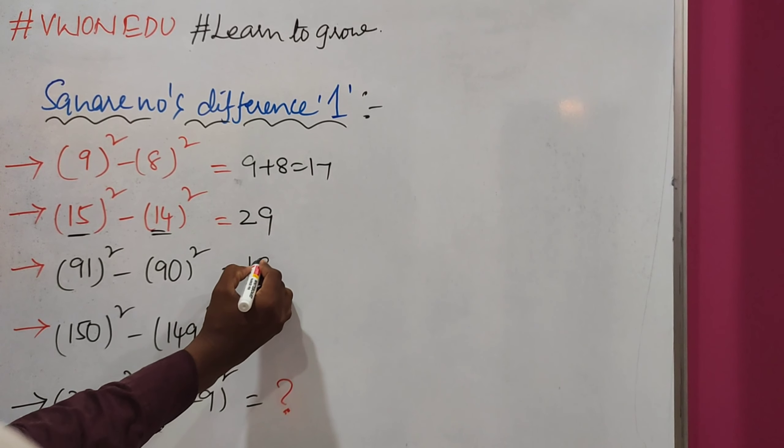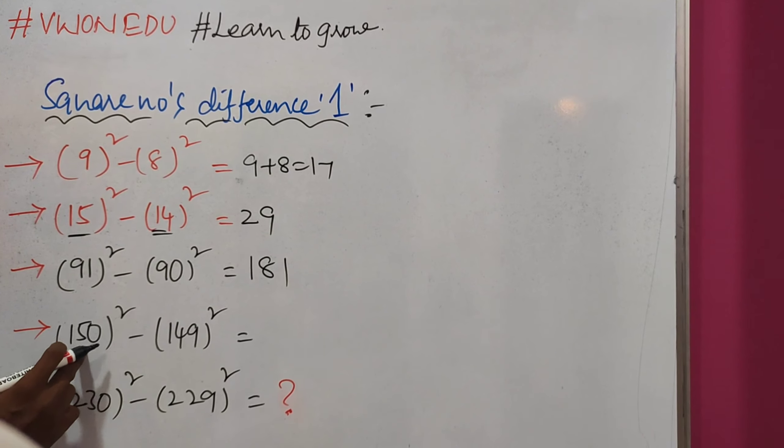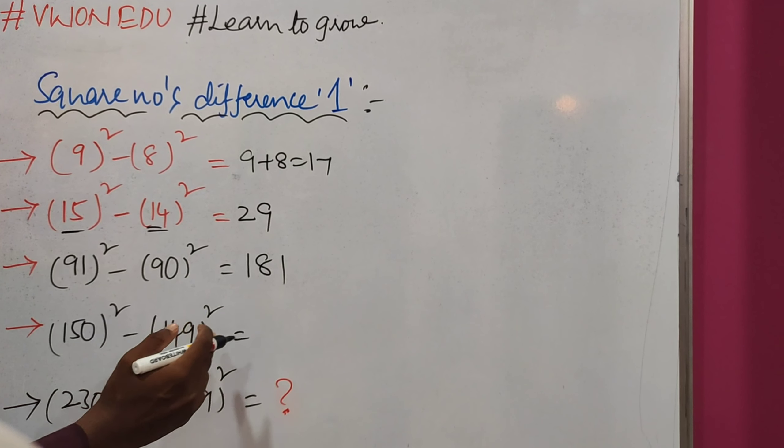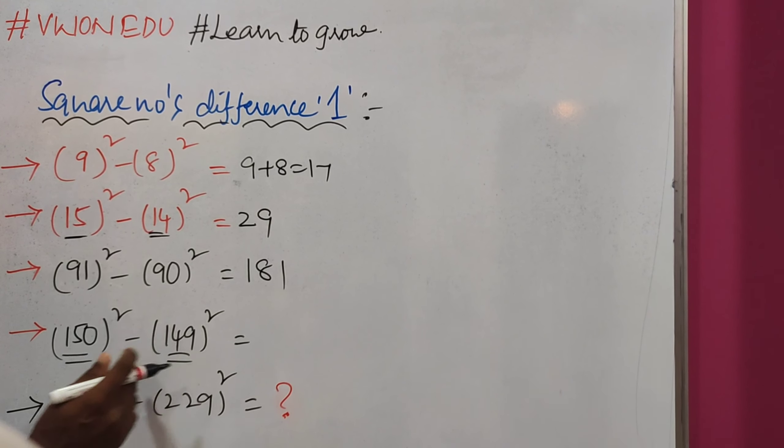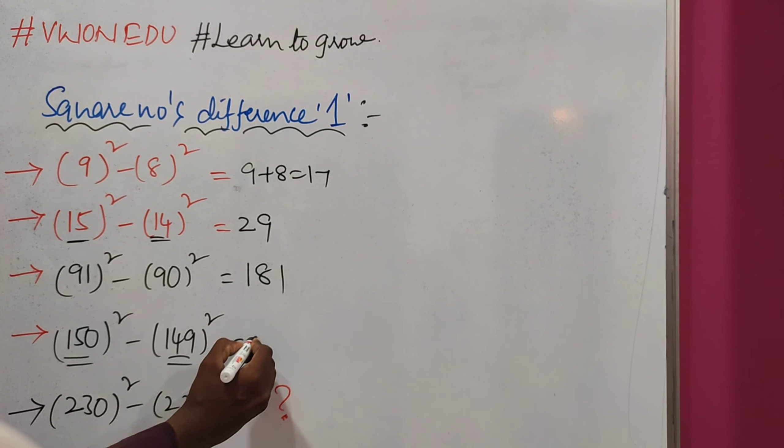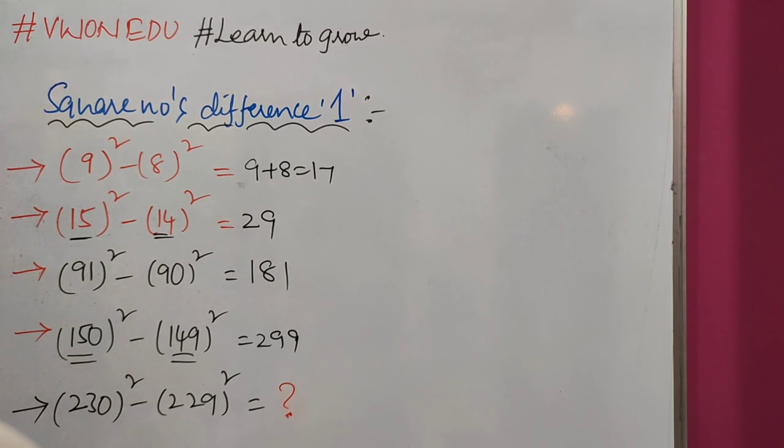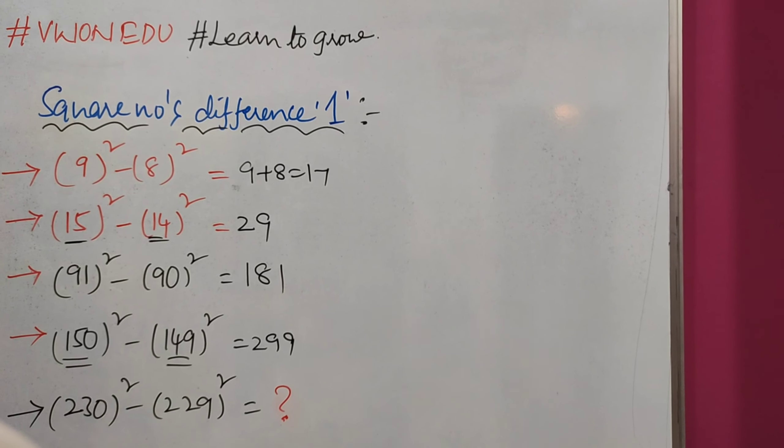150 square minus 149 square is nothing but the addition of these two: 150 plus 149 equals 299. Now tell me, what is the answer for this one? Please leave a comment.